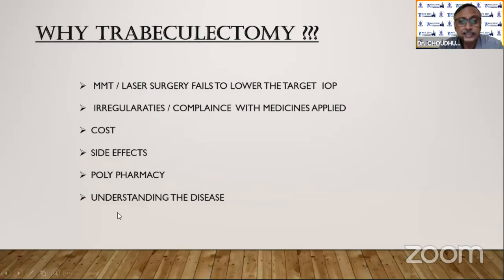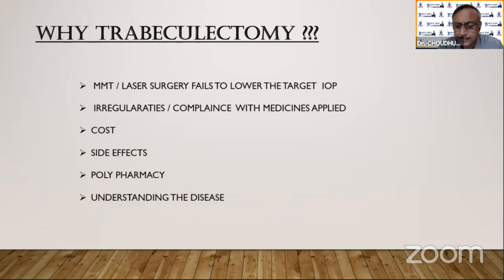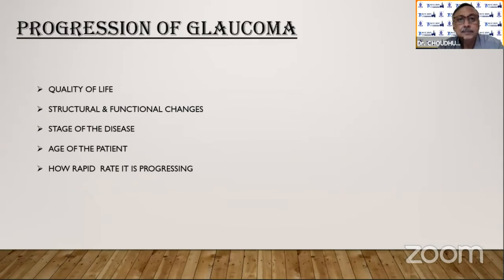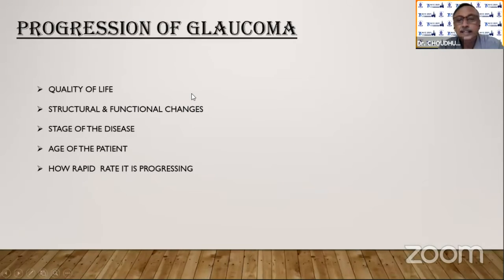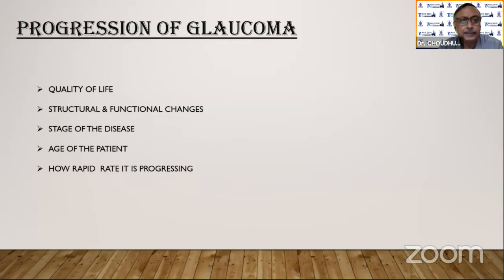The last thing I want to say is that first you have to understand the disease, make the patient and their family understand the disease before going for surgery — they need to understand what glaucoma is. Next is the progression of glaucoma. Maintaining quality of life is the main treatment goal. If you find any compromise there, or if there are structural and functional changes despite pressure being controlled on medication, I sometimes go for trabeculectomy.